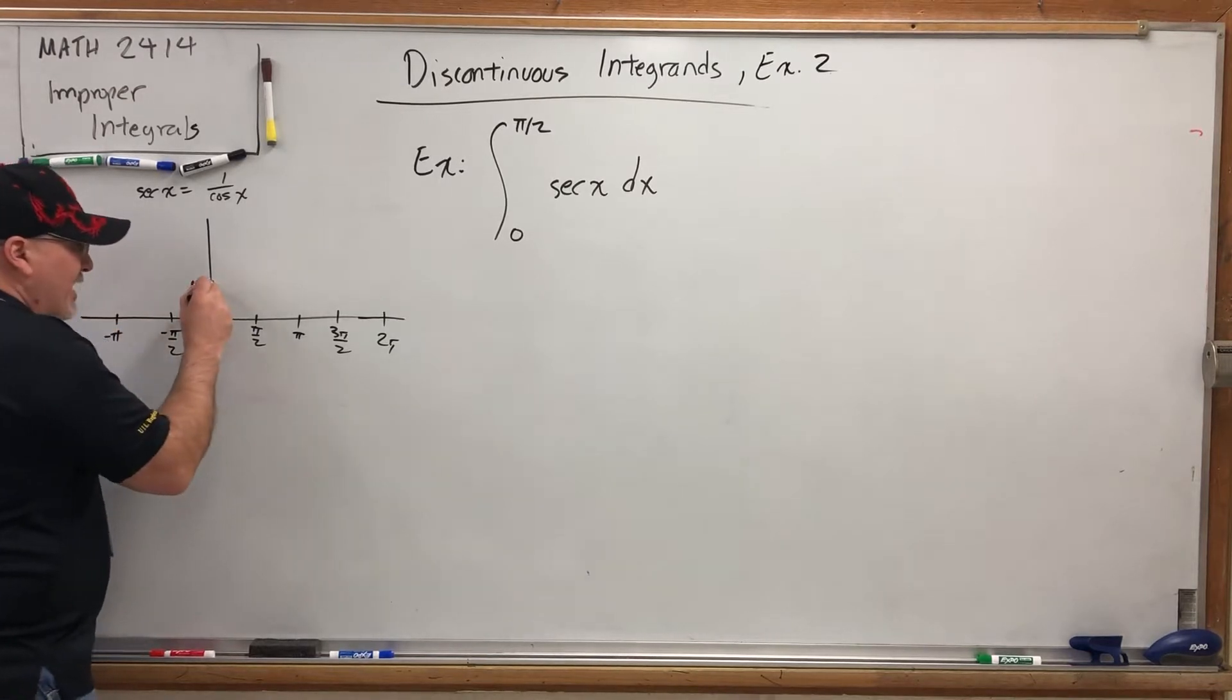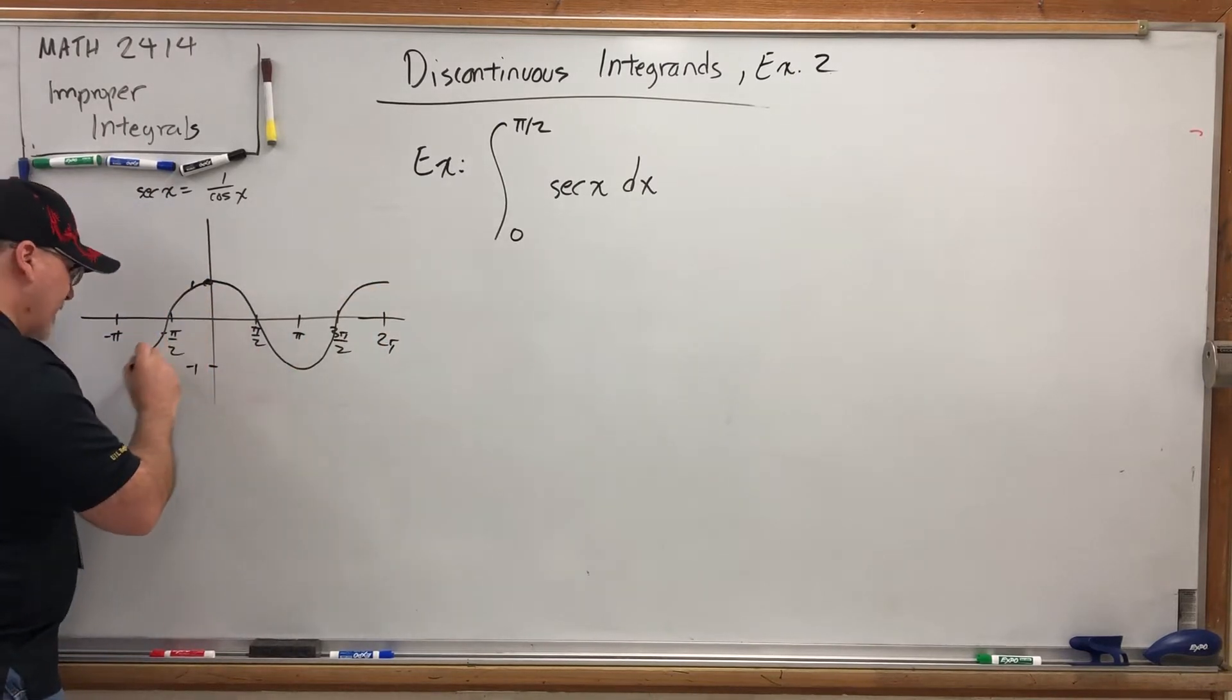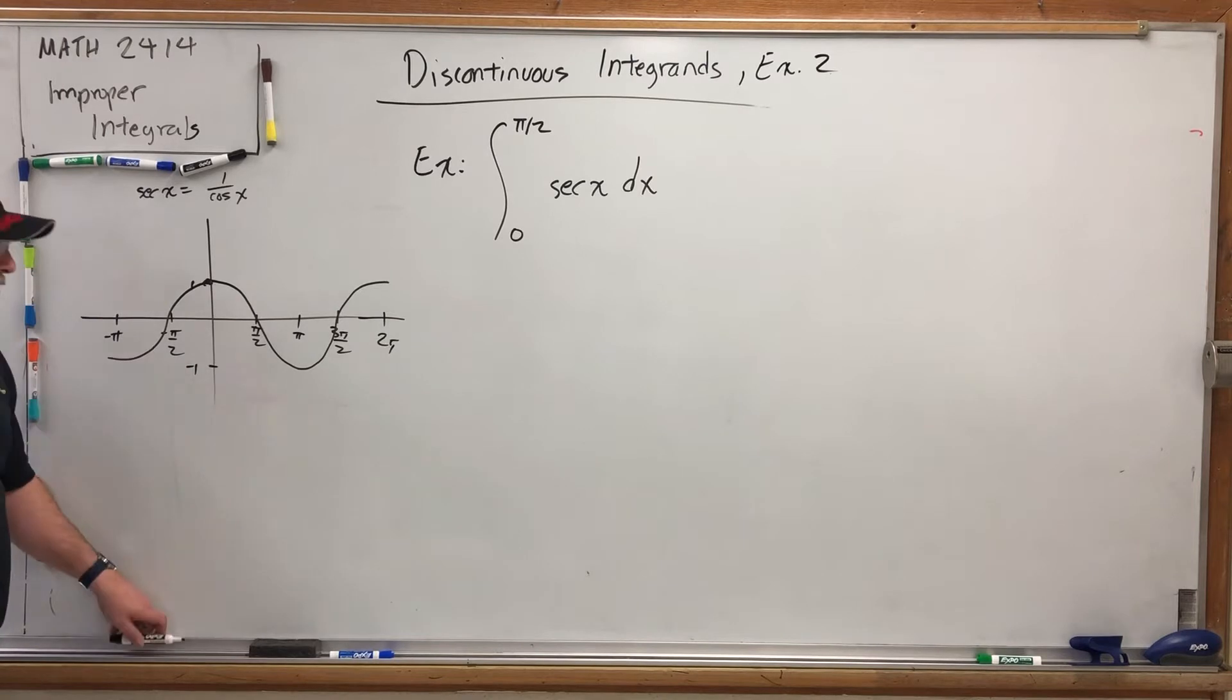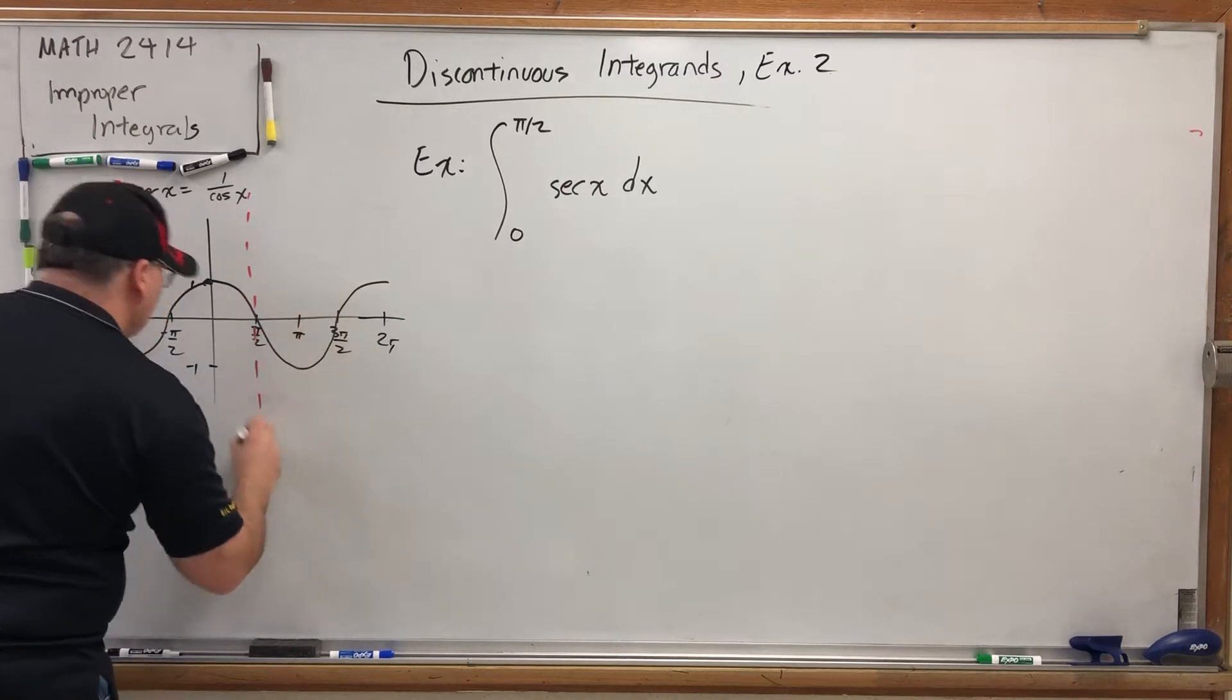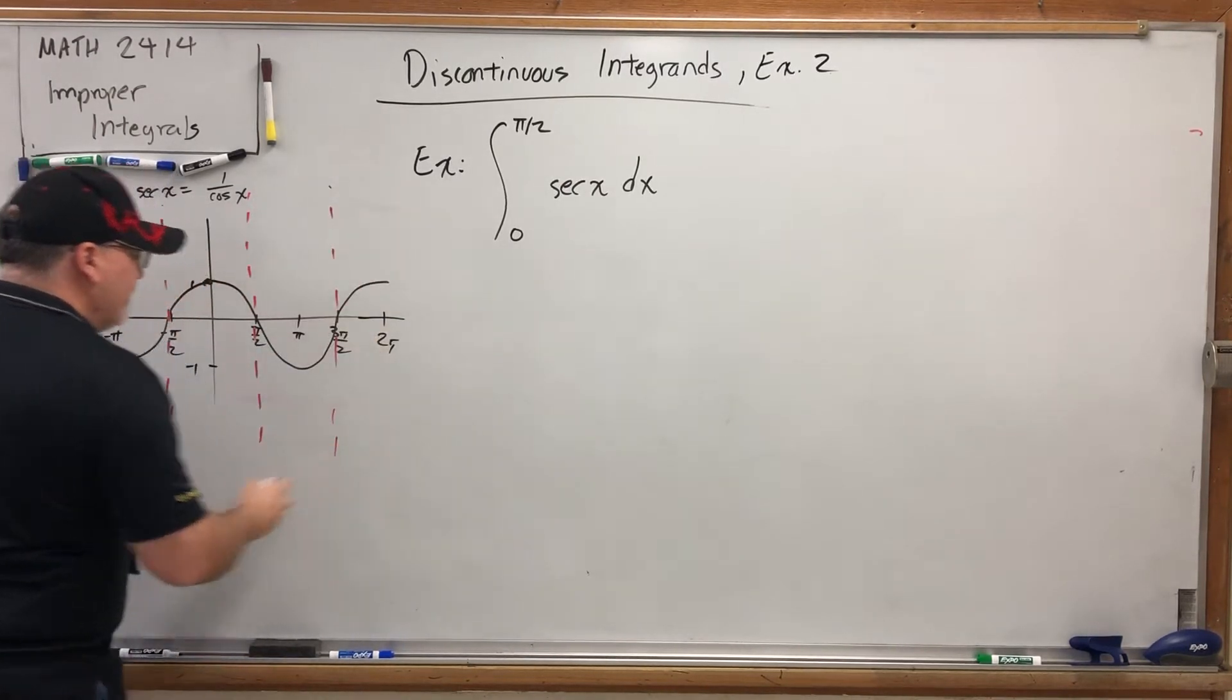But cosine starts high, and then goes high, middle, low, middle, high, and then it just reverses back here. But how do you get the graph of secant? By looking at the graph of cosine and realizing that you're reciprocating it. Now, what's the one number you can't reciprocate? Zero. So wherever cosine is zero, secant has an asymptote. Asymptote there, asymptote here, asymptote here, and there's an infinite number of them.